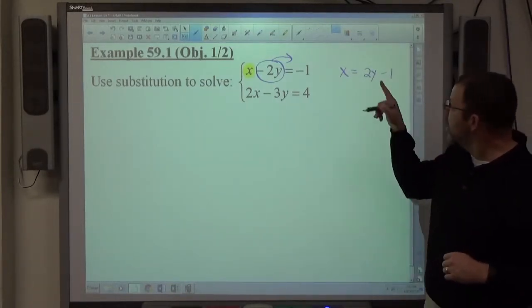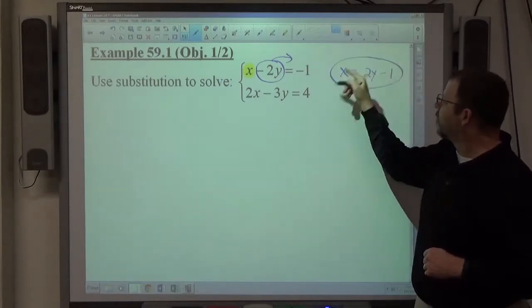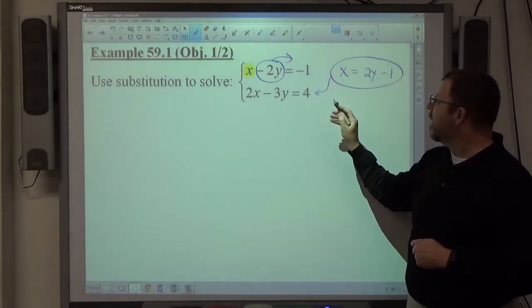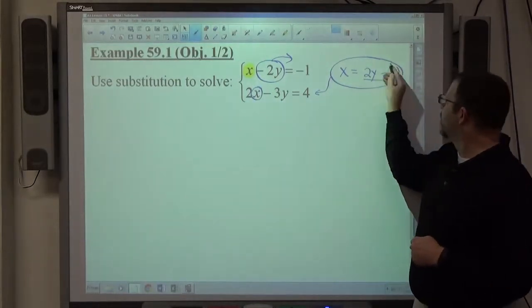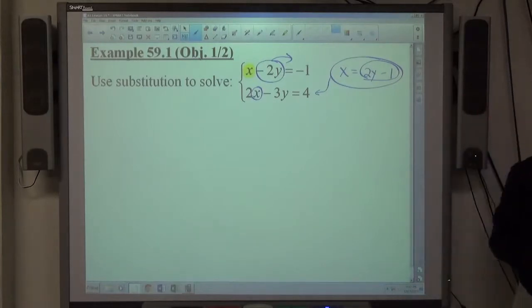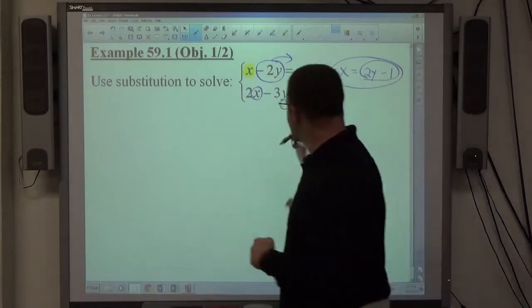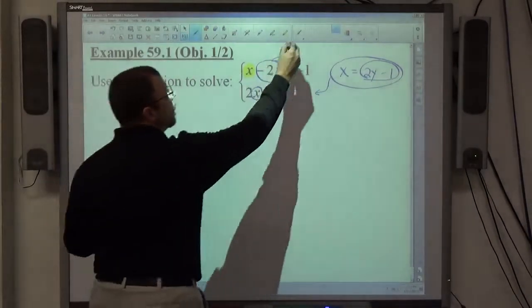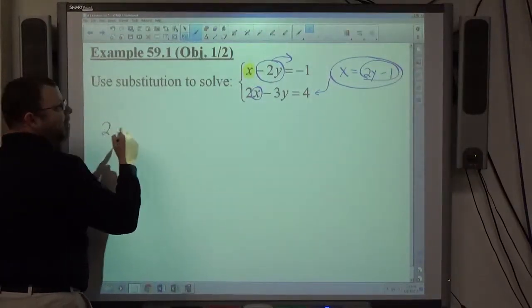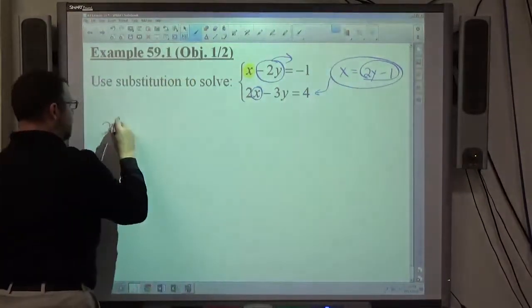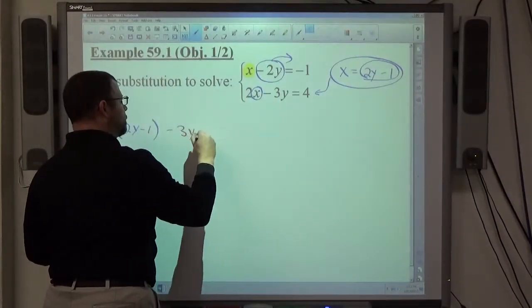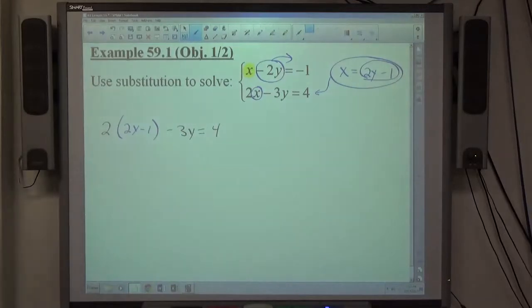Step 2. I've got this information from which equation? The top equation. So I'm going to go to the bottom equation and I'm going to replace this x with this expression, because x equals that expression. That's the substitution step. That's what's going to give me the ability to get the answer to this problem. So the bottom equation says exactly 2x minus 3y equals 4. It's going to continue to say that, but instead of writing 2x, I'm going to write 2 times (2y minus 1) minus 3y equals 4. That's the substitution step.